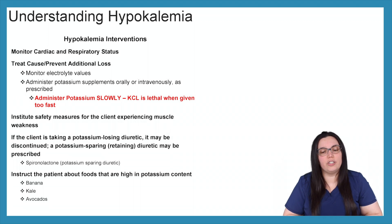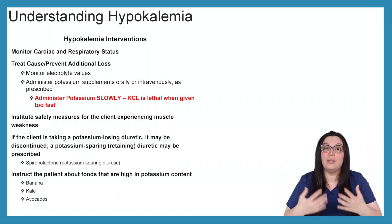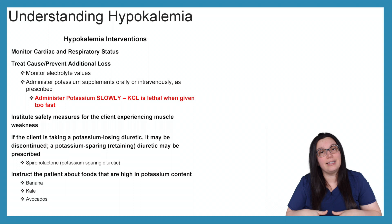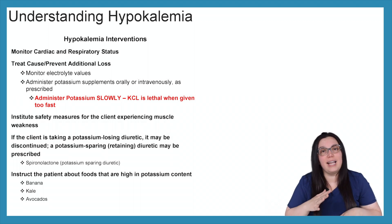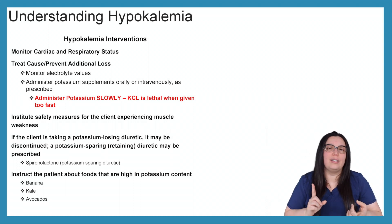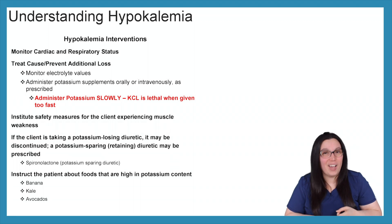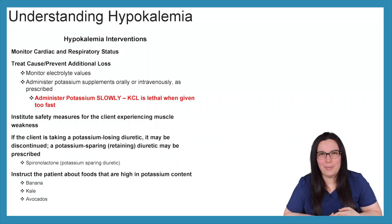Instruct the patient about foods that are high in potassium content — they should be ingesting these foods to help offset low potassium levels. Great options for hypokalemic patients include bananas, kale, and avocados.